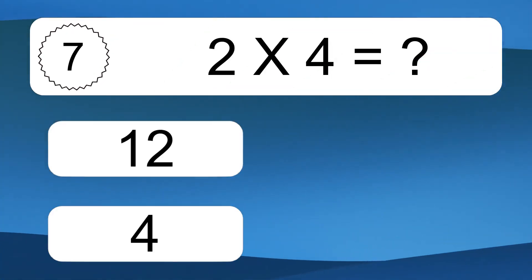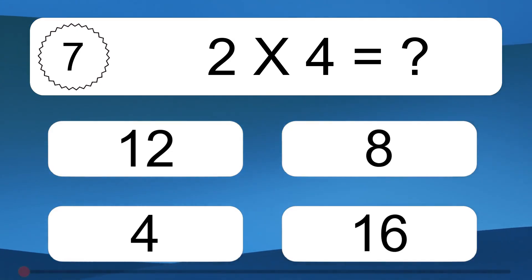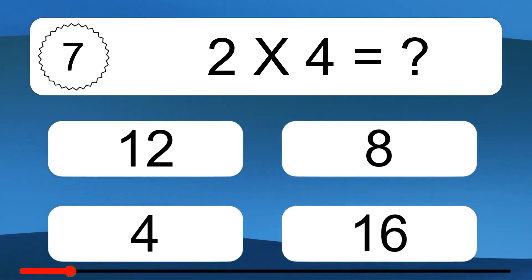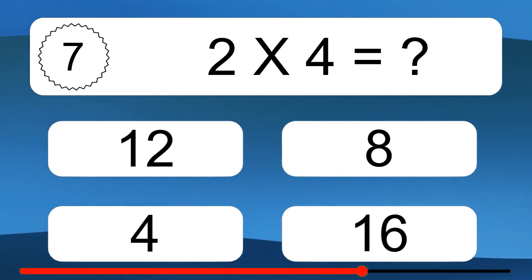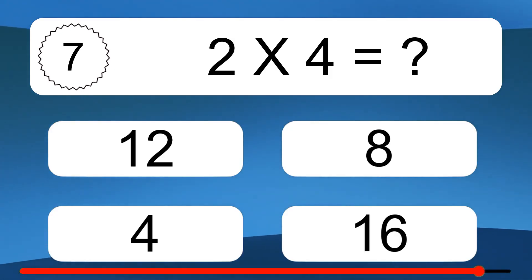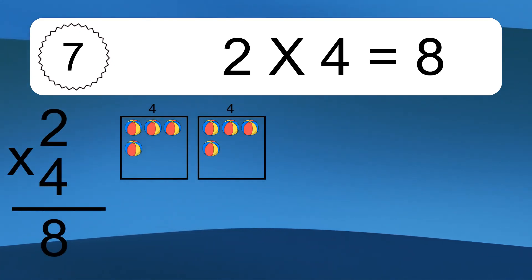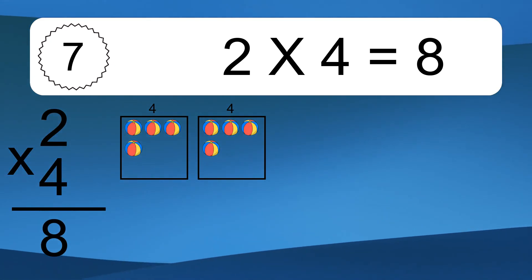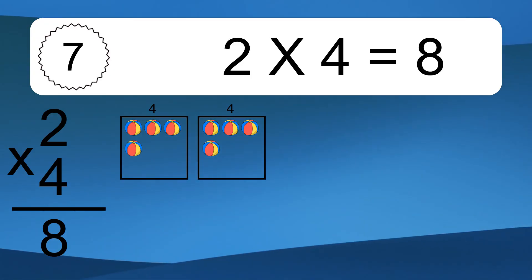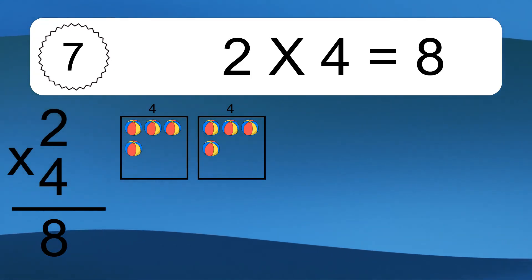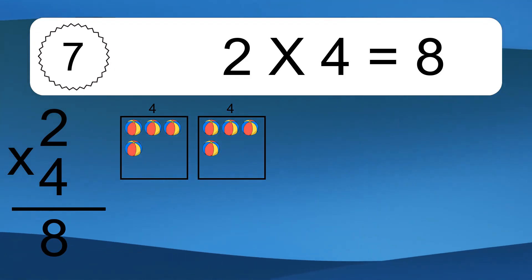2 times 4 equals what? 2 times 4 equals 8. We have 2 boxes, and each box has 4 colorful balls inside. If you count all the balls in all the boxes together, you will have 2 times 4 balls. This equals 8 balls.